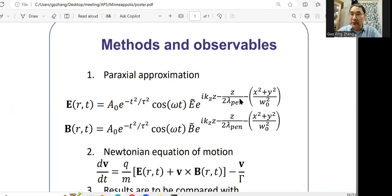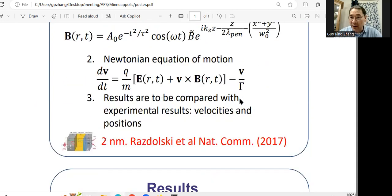Theoretically, we have two essential analytical equations under the paraxial approximation. And then we solve the Newtonian equation of motion for the electron. All these results were compared with Rasdolski's nature communication data. So they found that the depth that electron can go through the sample is around 2 nanometers or 20 angstroms. This gamma is essential damping. If I make this gamma smaller, then you can see total value is going to be larger.